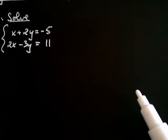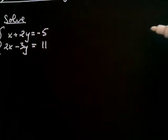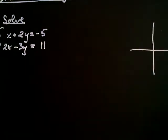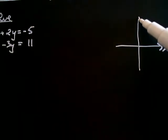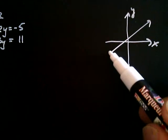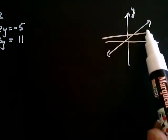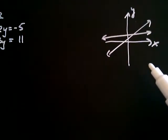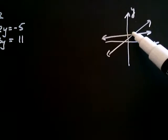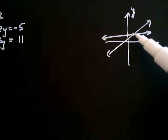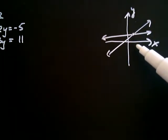Generally, when you have two lines, here's the x-axis and the y-axis. If I graph two lines — here's my first line and here's my second line — the point of intersection right here would be the solution to the system. So when we say solve a system of equations, that means find the point where the two lines intersect.